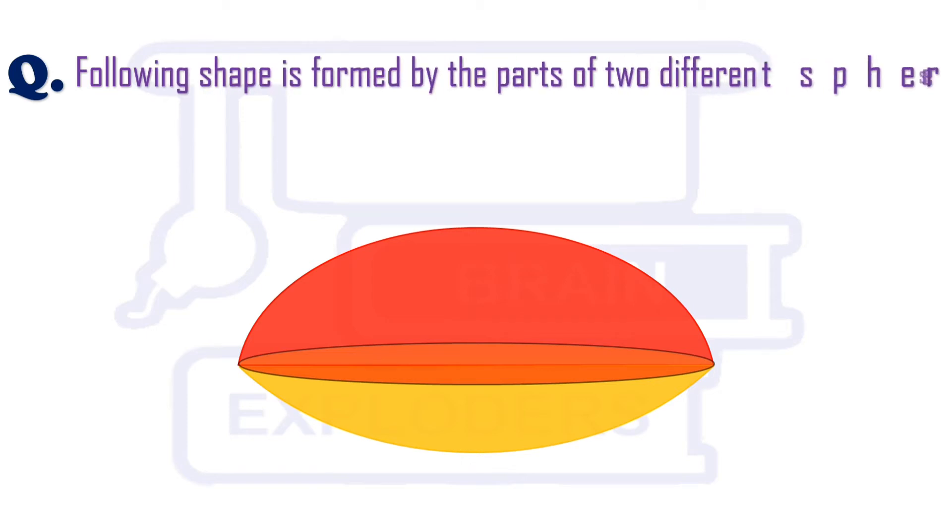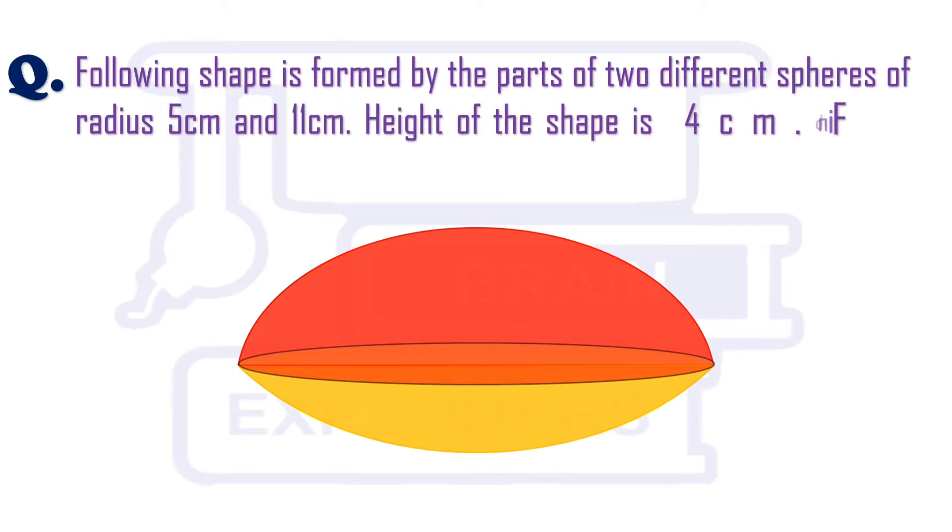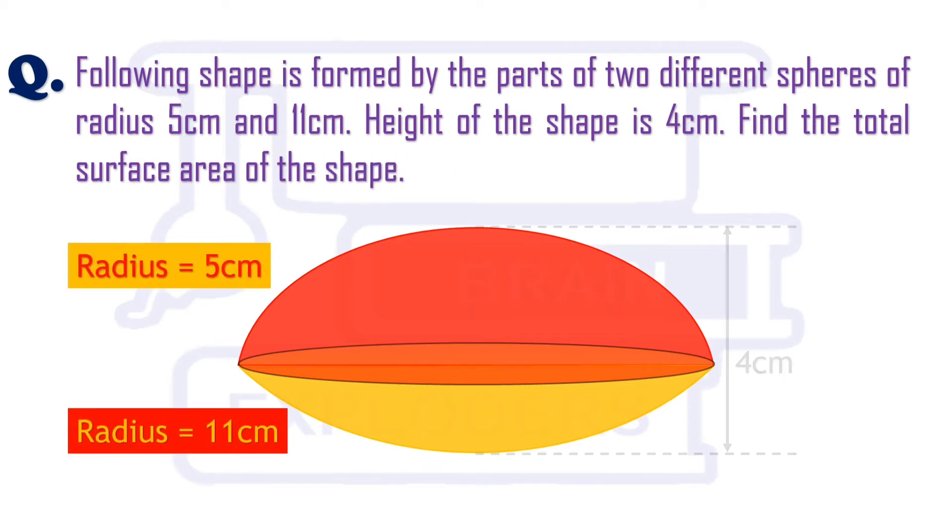The following shape is formed by the parts of two different spheres of radius 5 cm and 11 cm. Height of the shape is 4 cm. Find the total surface area of the shape.